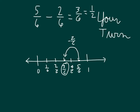Make sure to indicate how much you are subtracting as well. Read the whole number sentence: five-sixths minus two-sixths, where those denominators are the same, does equal three-sixths, which equals one-half — expressed in simplest form.